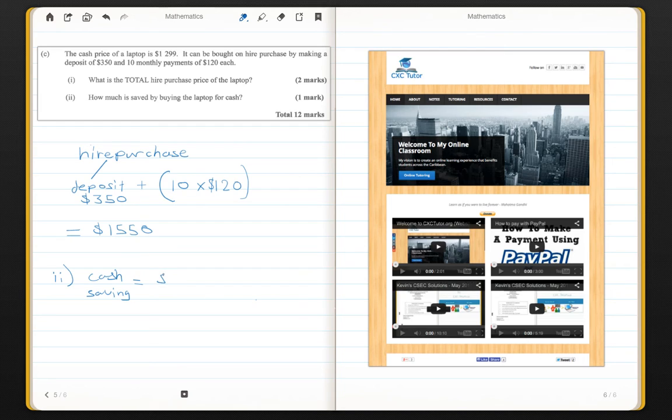So to work this out, I'm just going to simply subtract the original value from the higher purchase value. Which would be $1,550 minus $1,299 and that will give me $251 that I would have saved if I bought the laptop on cash.